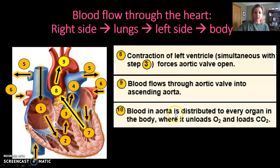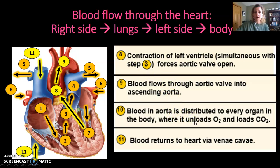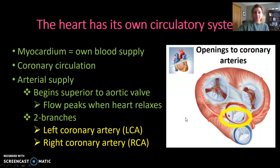Blood in the aorta is distributed throughout the body, and once gas exchange has occurred in the tissues, deoxygenated blood returns to the heart through the inferior and superior vena cavae — and that is how blood flows through the heart. The heart also has its own circulatory system: myocardial cells cannot use blood inside the chambers, and can only receive blood through the right and left coronary arteries. We'll talk about the coronary arteries and the heart's circulatory system in part three.